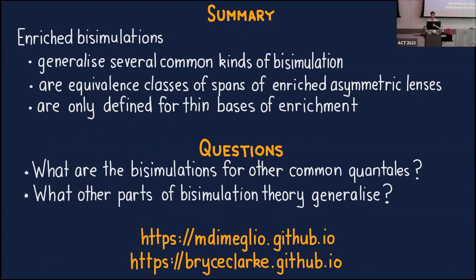In summary: we've defined a notion of enriched bisimulation that generalizes several well-known notions of bisimulation. We have a way of viewing enriched bisimulations as spans of enriched asymmetric lenses. These are defined not for any distributive monoidal category but for the thin ones — either sub-lattices or quantales. Future questions: what are the bisimulations for other common quantales, are they things mathematicians already know about, and what parts of bisimulation theory from computer science and logic can we lift to this setting and apply in other parts of mathematics?